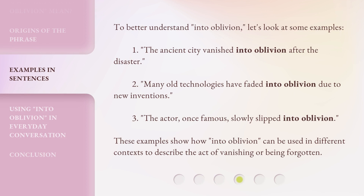To better understand 'Into Oblivion,' let's look at some examples. First: 'The ancient city vanished into oblivion after the disaster.' Second: 'Many old technologies have faded into oblivion due to new inventions.' Third: 'The actor, once famous, slowly slipped into oblivion.' These examples show how 'Into Oblivion' can be used in different contexts to describe the act of vanishing or being forgotten.